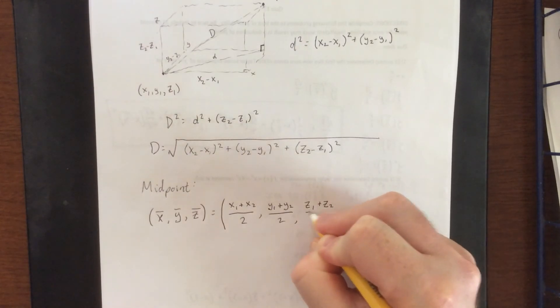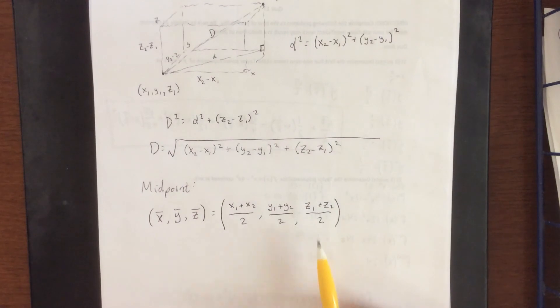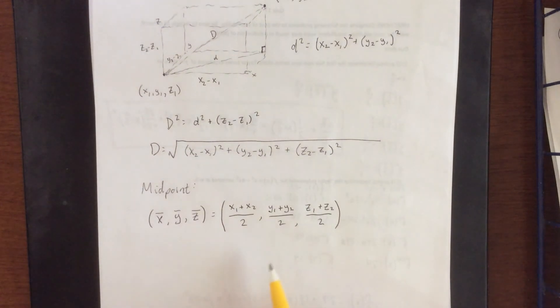One place this is going to come in handy is when we start talking about spheres in three dimensions. If we're given the diameter of a sphere, we should be able to figure out the center and radius based on that using the distance and midpoint formulas. We'll see that in a couple videos from now.